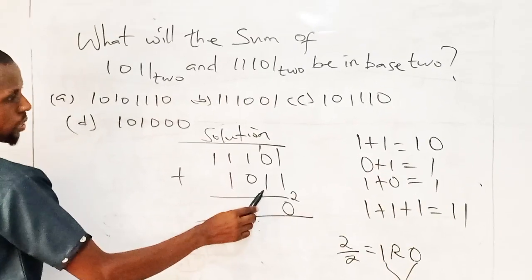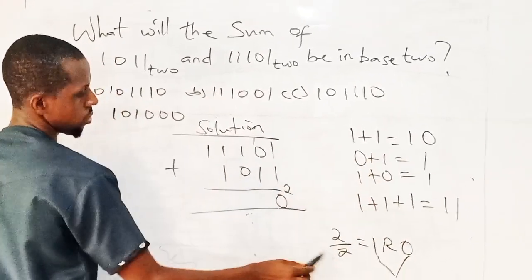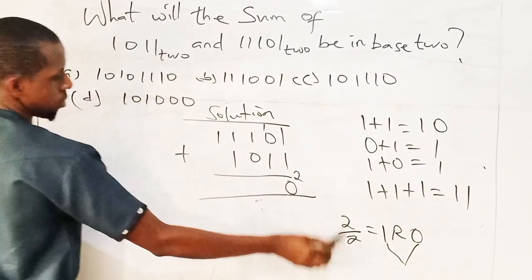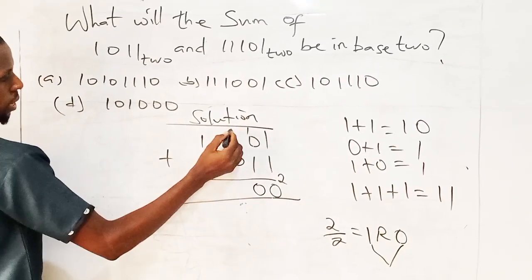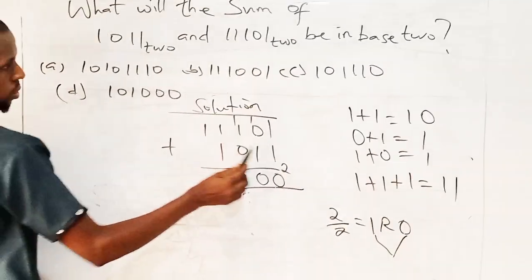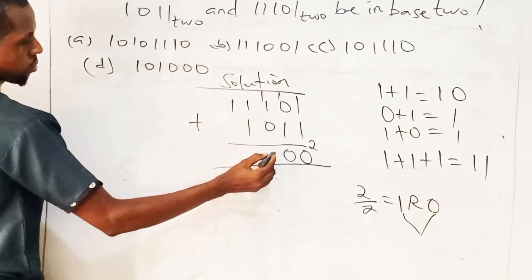So the same thing, 1 plus 0 plus 1 is still 1 plus 1 to be 10. This is the proof. So I have 0, I carry 1. 1 plus 1 is still 10 plus 0 is still 10. So I have 0, I have my 1.